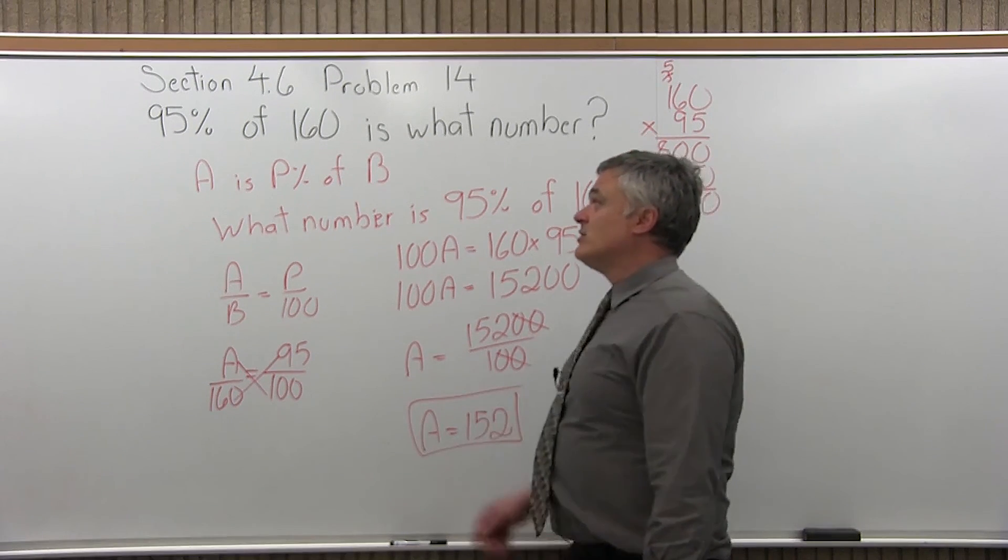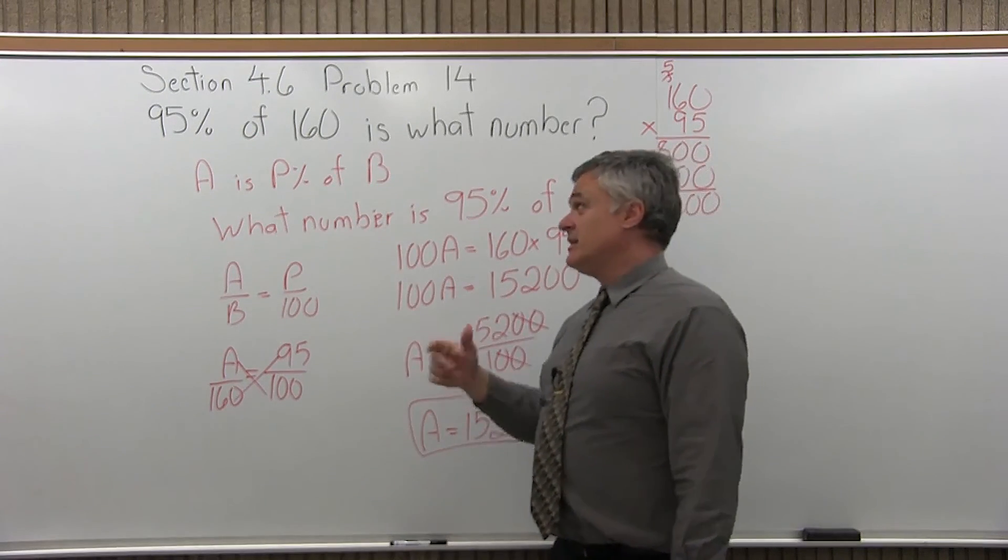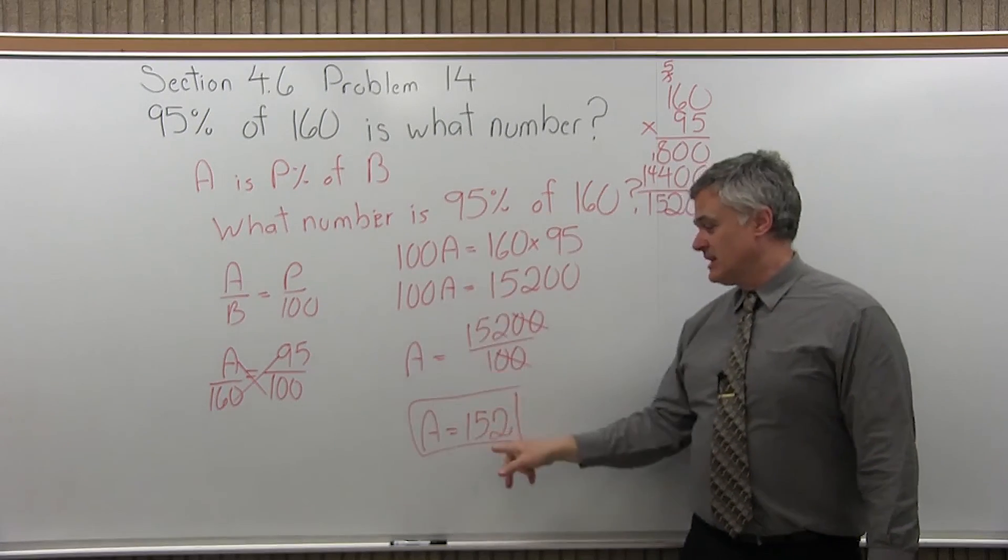So that's the answer. So if you go back to the original question, 95% of 160 is what number? The answer is 95% of 160 is 152. That's the answer.